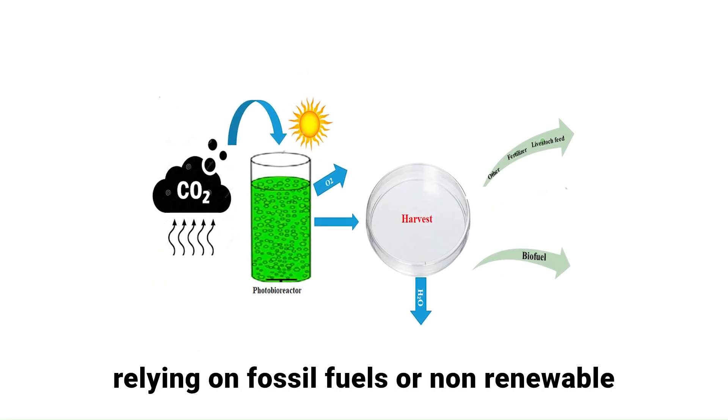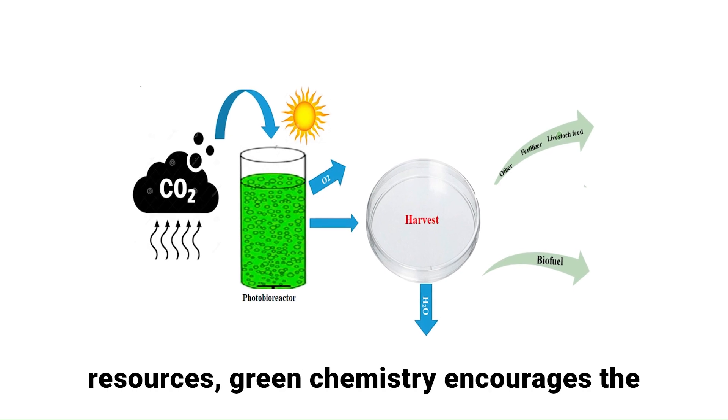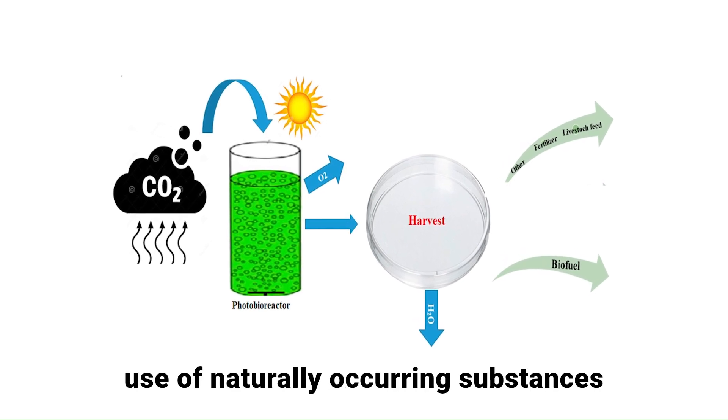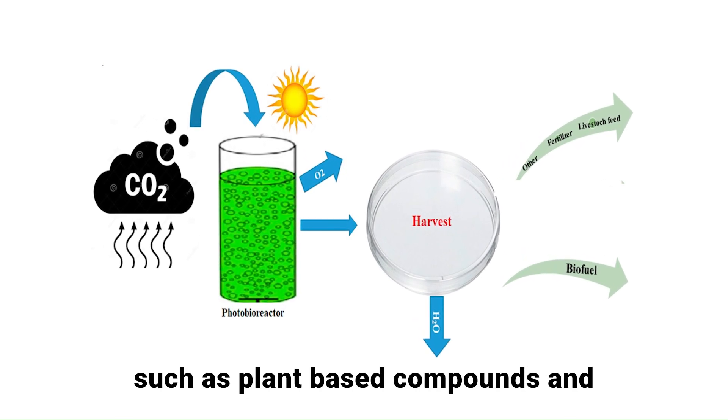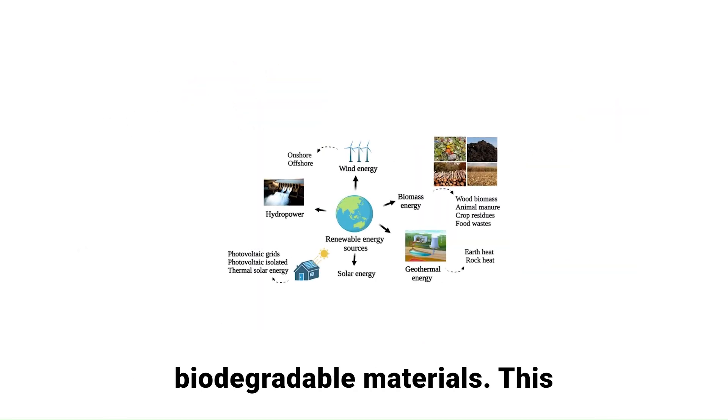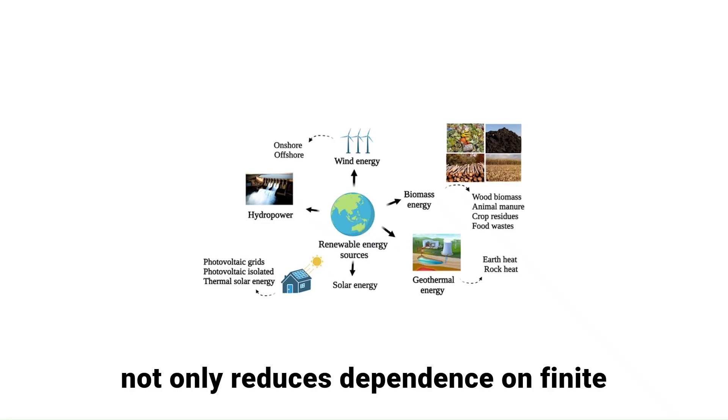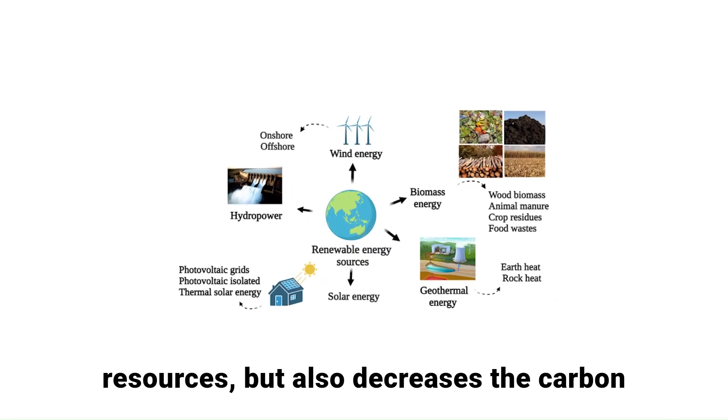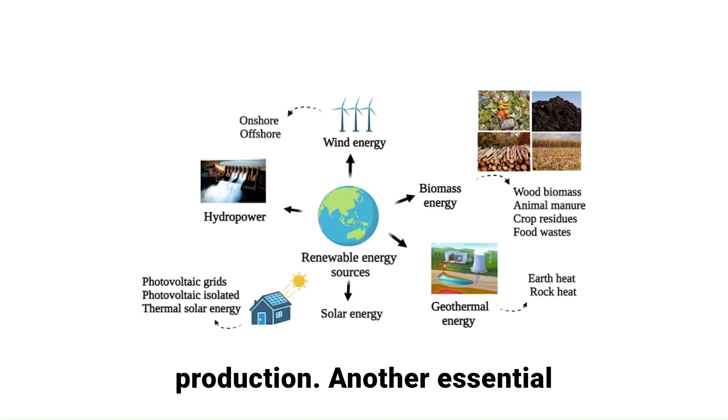Instead of relying on fossil fuels or non-renewable resources, green chemistry encourages the use of naturally occurring substances such as plant-based compounds and biodegradable materials. This not only reduces dependence on finite resources but also decreases the carbon footprint associated with chemical production.